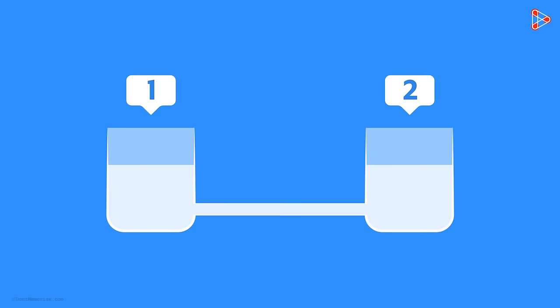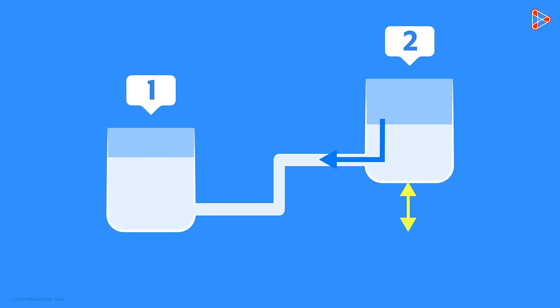It's easy! One of the things you could do is raise the height at which the second beaker is kept. Once it's raised at a height, the water will flow from beaker 2 to beaker 1.